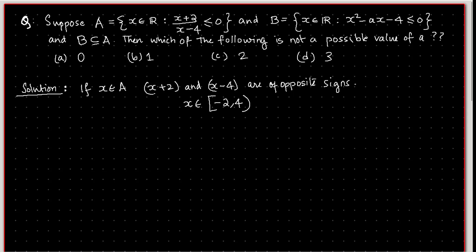If x is an element in B, then we want x² - ax - 4 to be less than or equal to 0. Observe that this is a quadratic equation with a positive leading coefficient.